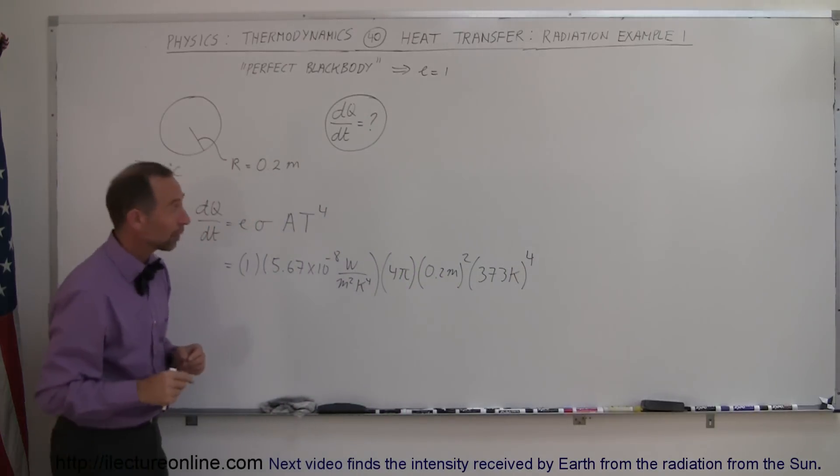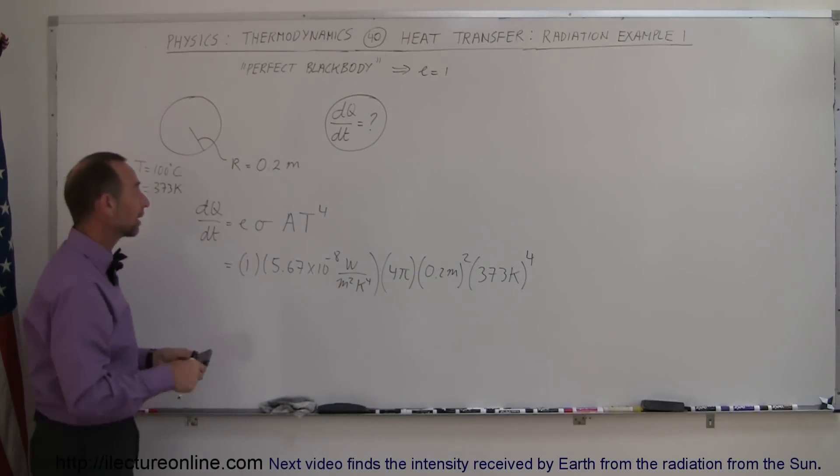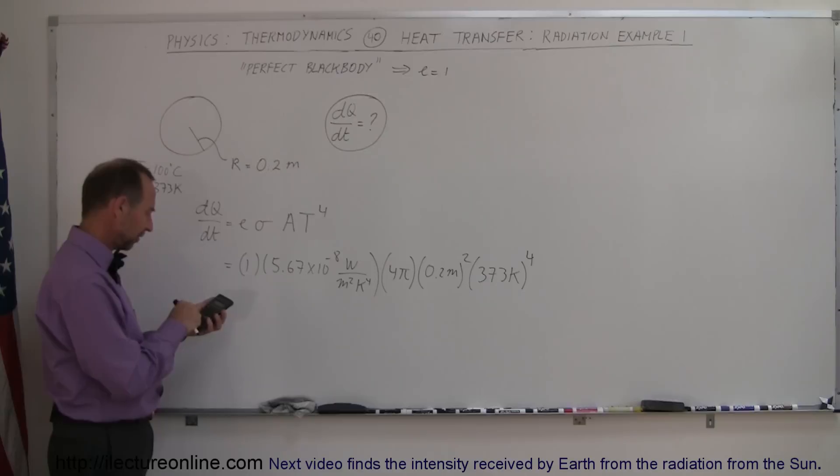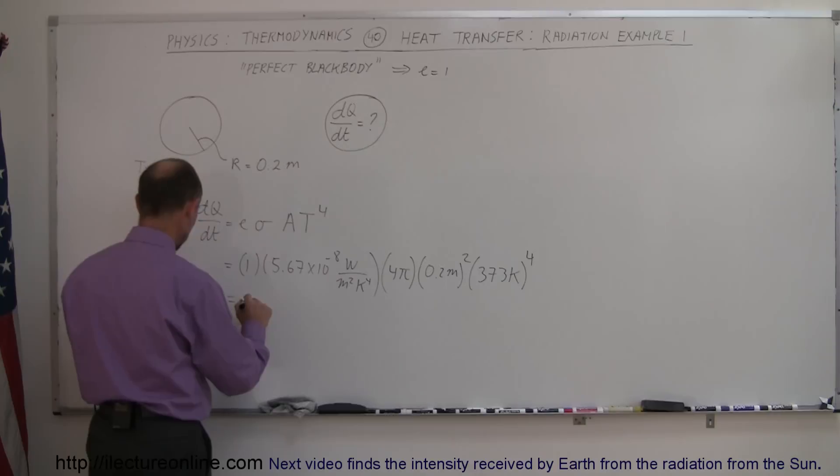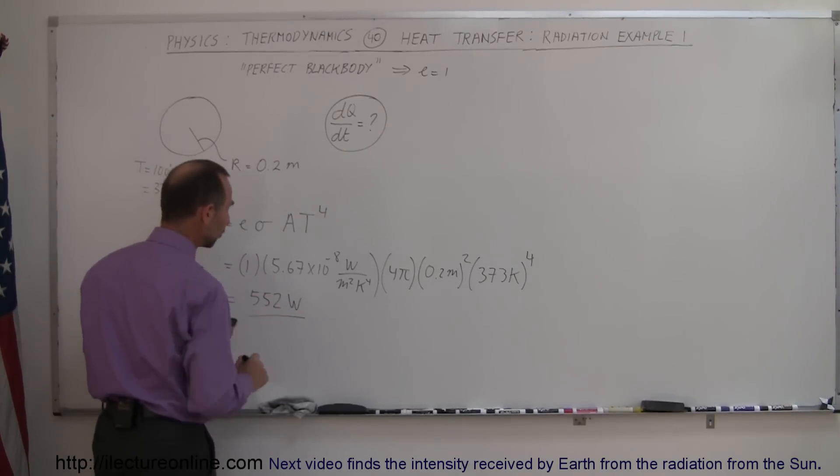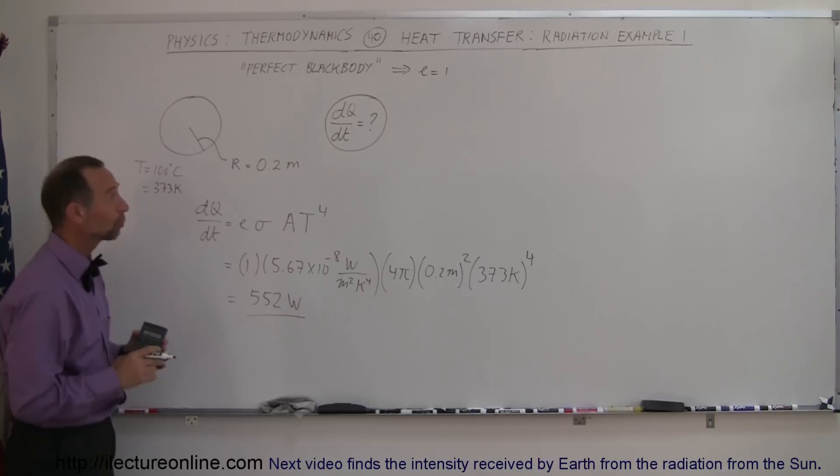Now with the calculator we can figure out the amount of heat radiated by that sphere. We have 5.67 e to the minus 8 times 4 times π times 0.2 squared times 373 to the fourth power equals, and that sphere will radiate out 552 watts of energy or 552 joules per second.